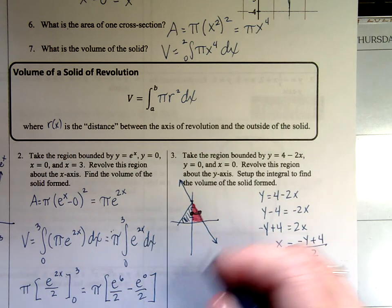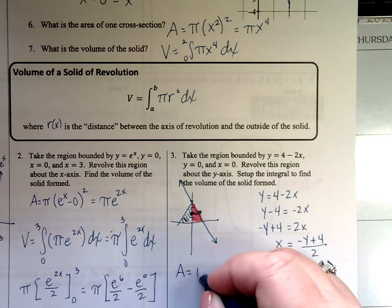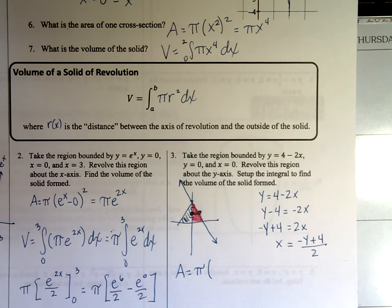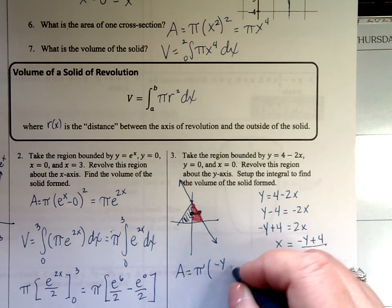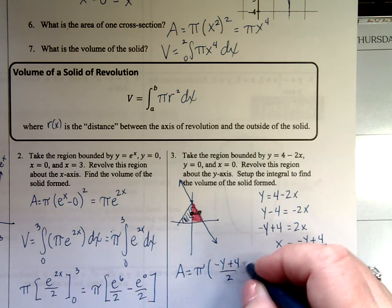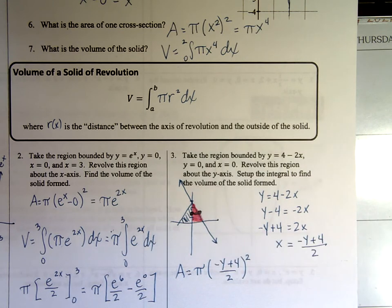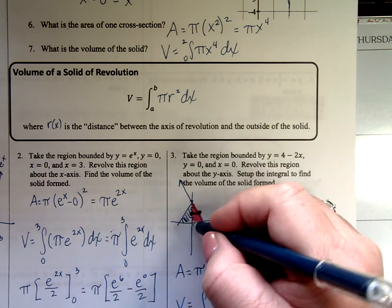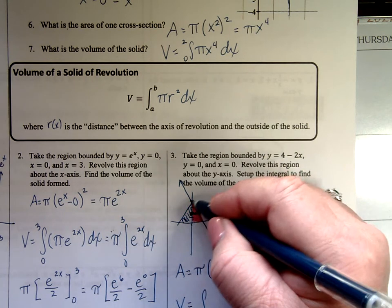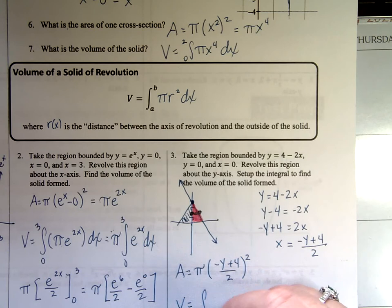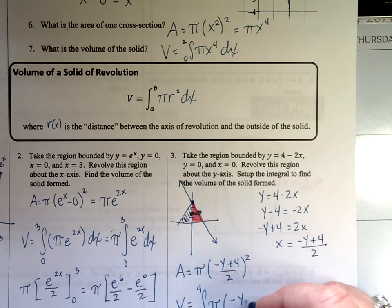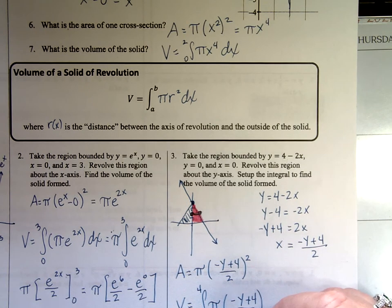So let's put our area together first. It is pi times r. R is right minus left. Right is the function. Negative y plus 4 over 2. Left is 0. So I don't really need that. Squared. There it is. Put your volume together. My bounds have to be the vertical bounds. So this is 0 down here. We know that this top part was my y-intercept of 4. So 0 to 4 of my area pi negative y plus 4 over 2 quantity squared dy.